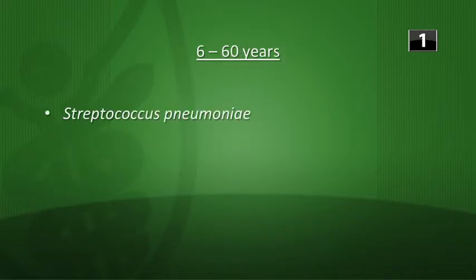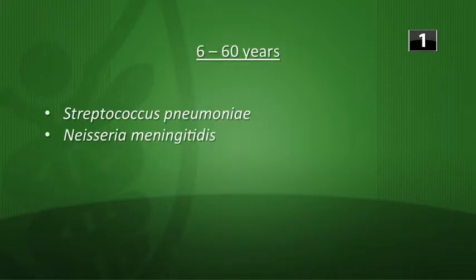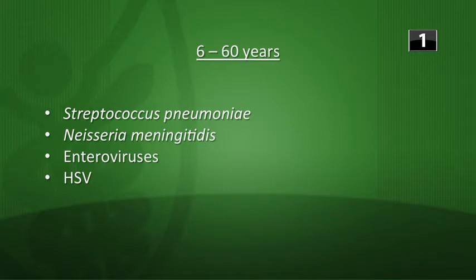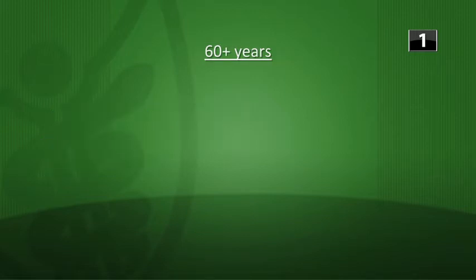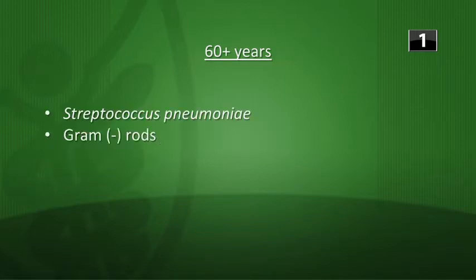From six years to 60, you have Strep pneumoniae again, Neisseria meningitidis, enteroviruses, and HSV. Remember that HSV causes temporal lobe encephalitis — we're talking about meningitis, but the two can overlap. Over age 60, you have Strep pneumoniae again, gram-negative rods start to show up, and Listeria.